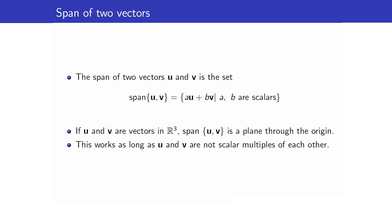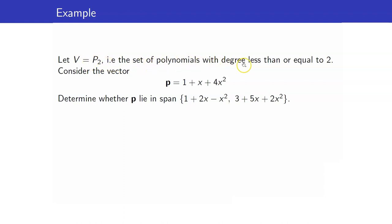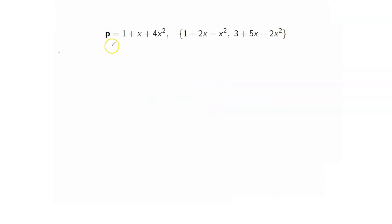Take note that this works only as long as U and V are not scalar multiples of each other. Now let us recall the vector space P2, the set of polynomials with degree less than or equal to 2. We have the polynomial 1 plus x plus 4x squared, and we want to determine whether this polynomial lies in the span of two given vectors V1 and V2. We want to check if we can find scalars A1 and A2 such that P is a linear combination of V1 and V2.